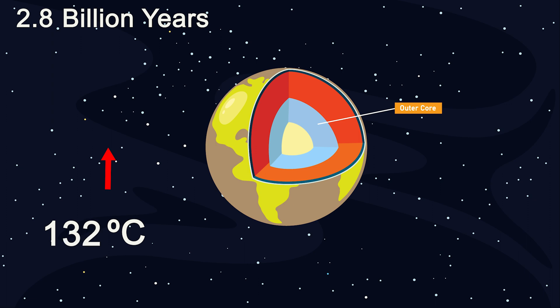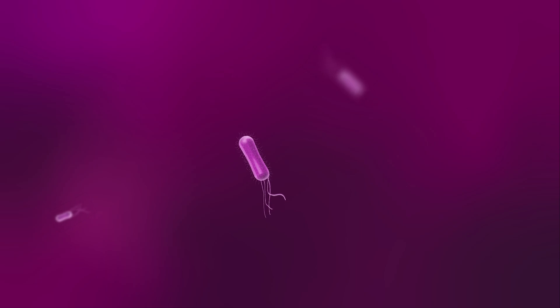And by 2.8 billion years, with a surface temperature of 149 degrees Celsius, the last prokaryote would die, meaning the end of life on Earth.